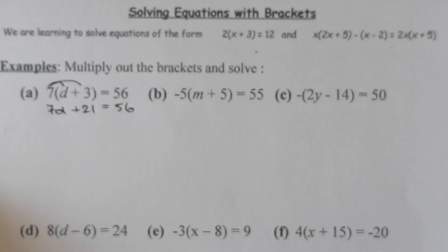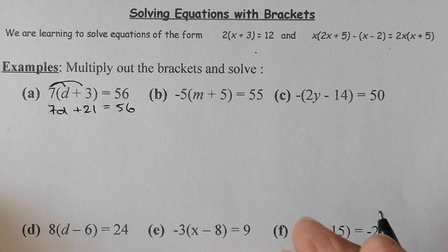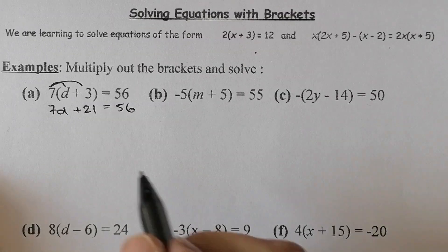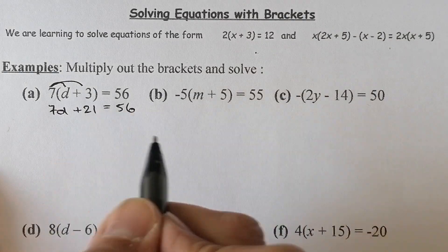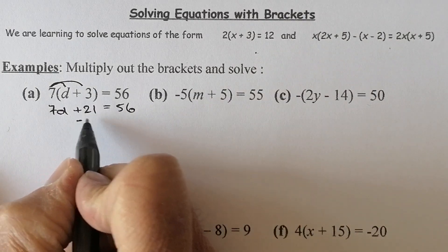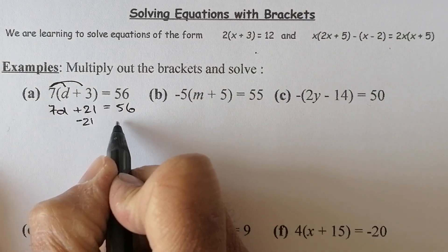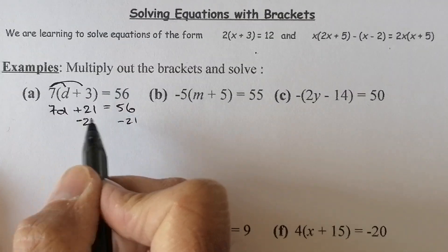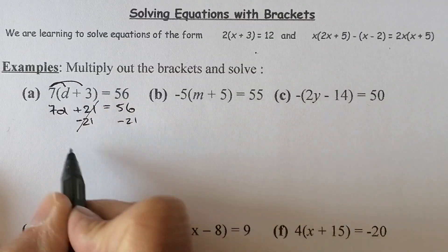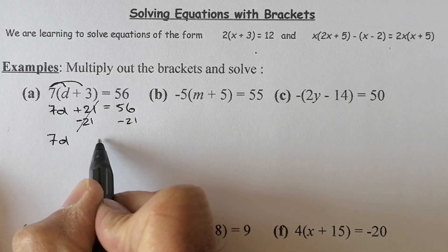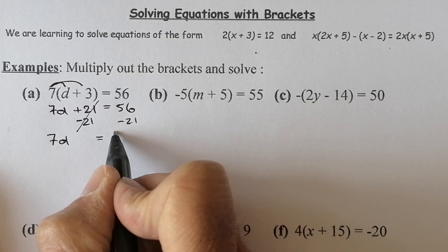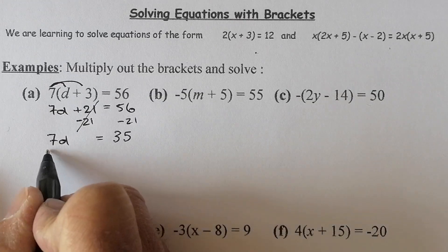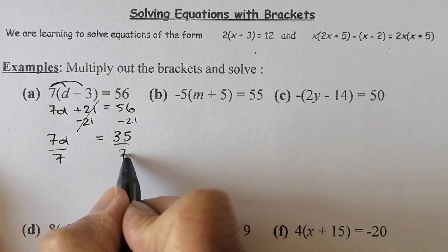So it's plus 21 and that equals 56. This is us using our algebraic expressions and our knowledge of multiplying out brackets to solve equations. I'm going to get rid of that 21 on the left-hand side — so subtract 21 from both sides. That cancels out, giving me 7d equals 35.